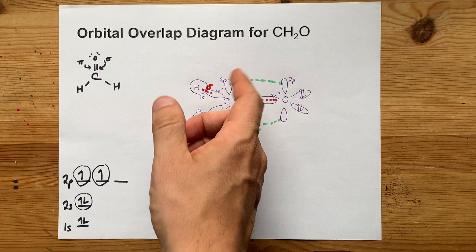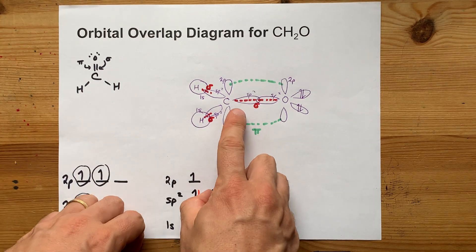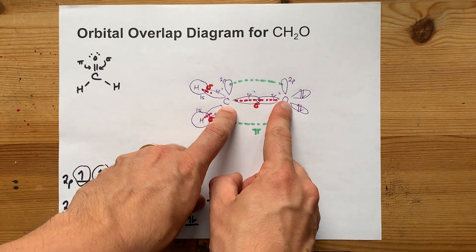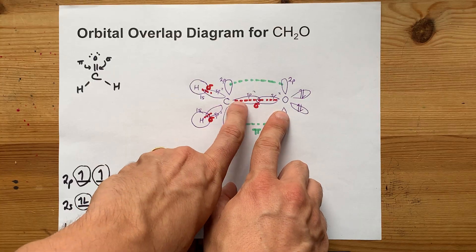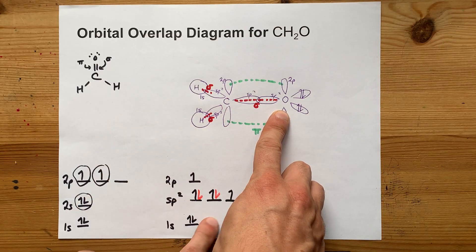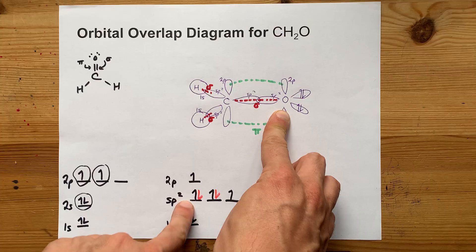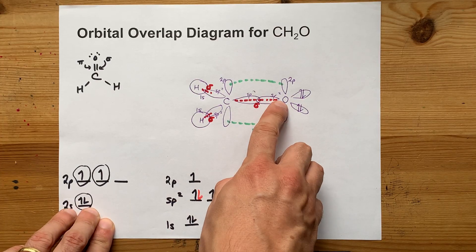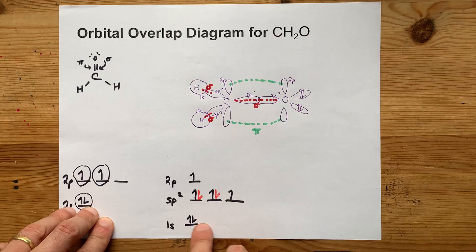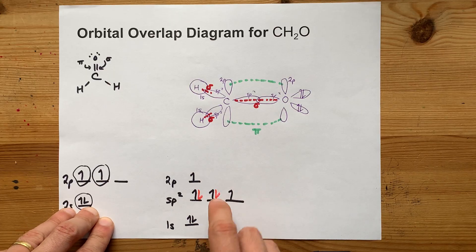And there you have it. Orbital overlaps. The sigma bond between carbon and oxygen is between carbon's sp² hybridized orbital, that's in black here, and oxygen's sp² hybrid orbital. That's in black and pink combined here.